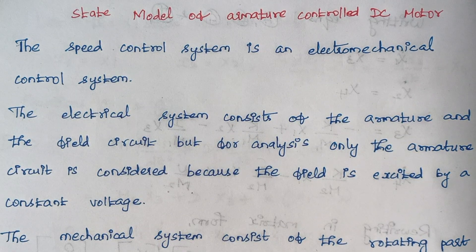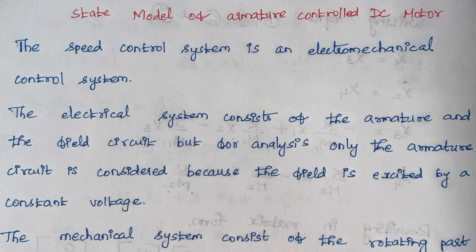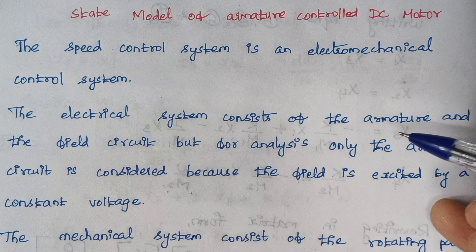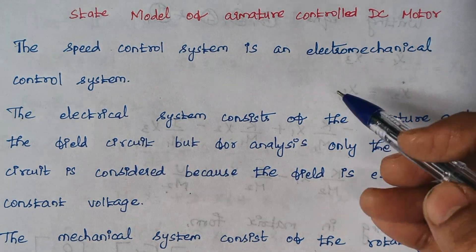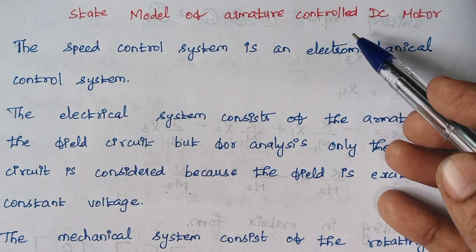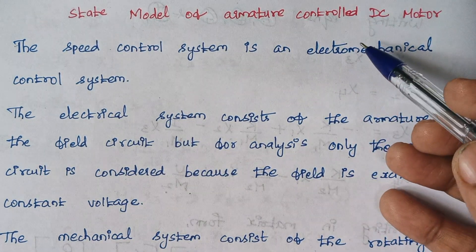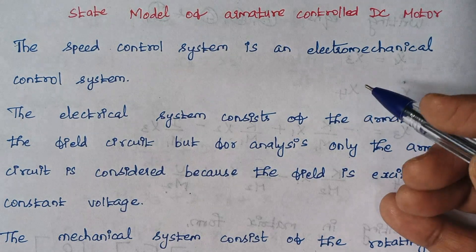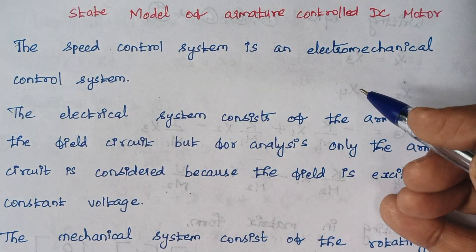Hello viewers, I am Kausalya. Today we are going to discuss the state model of an armature controlled DC motor. The main thing we are going to discuss about is the speed — how speed is controlled in a DC motor.